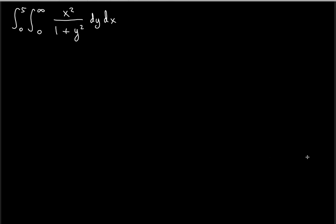We want to find the value of this double improper integral. First, you want to take it one variable at a time. As you can see, the inner variable is the dy integral, so we need to take care of that first. We'll leave out the outer integral from zero to five.